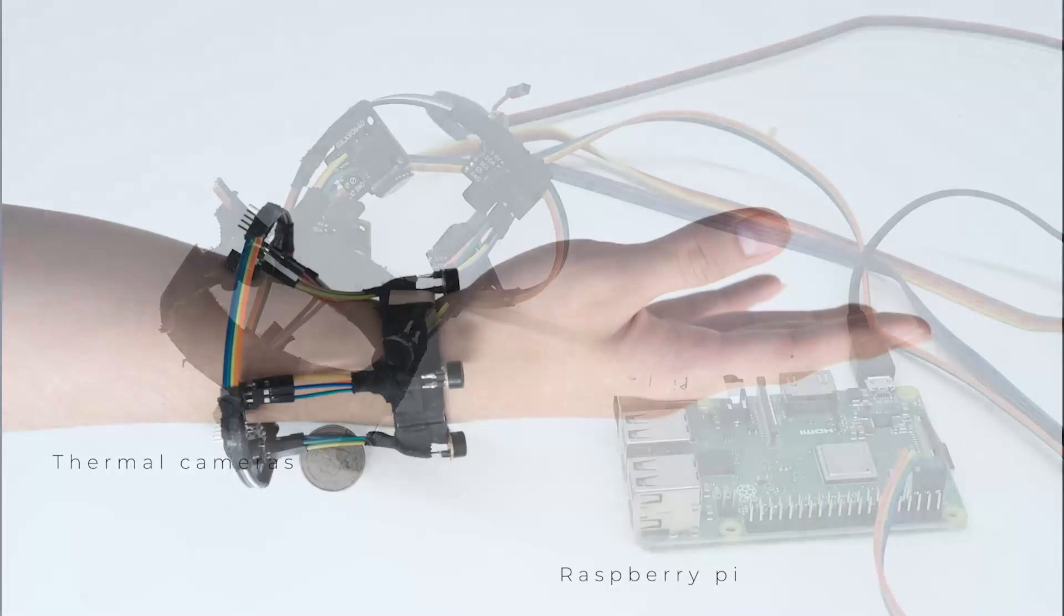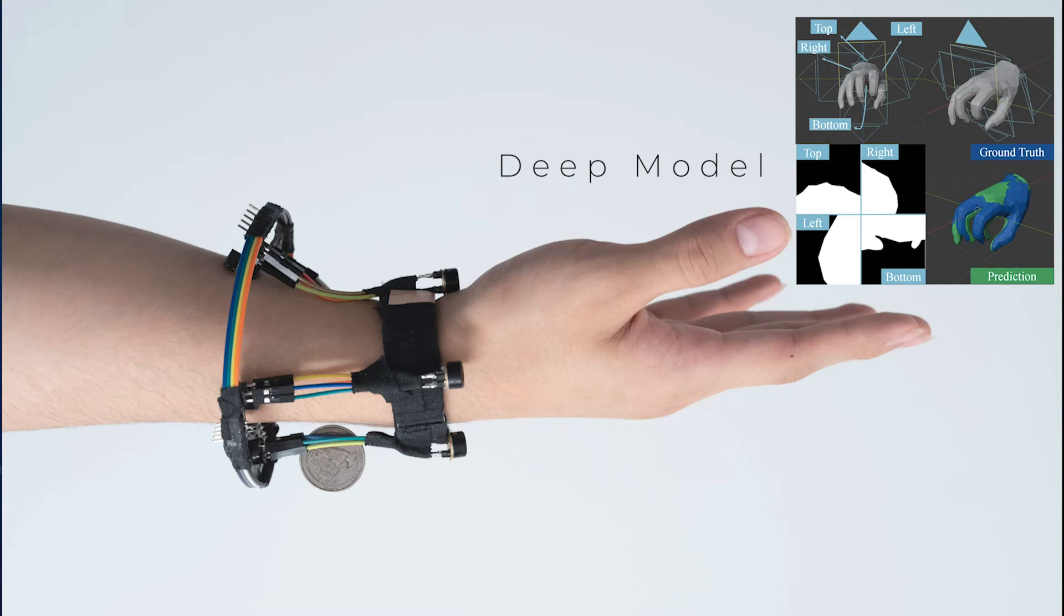The deep model that drives the prediction process can estimate all hand joint positions in 3D space, even when the hand is holding objects.